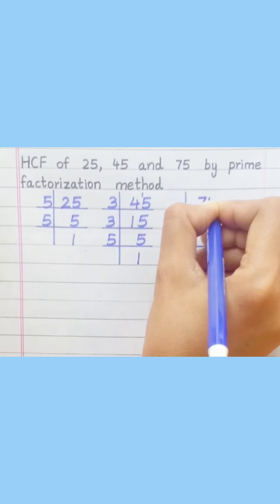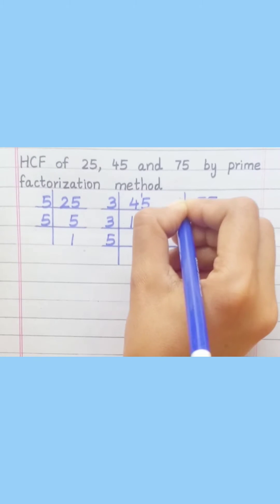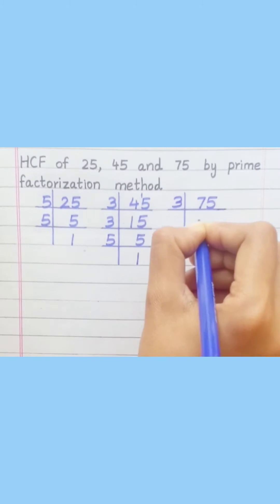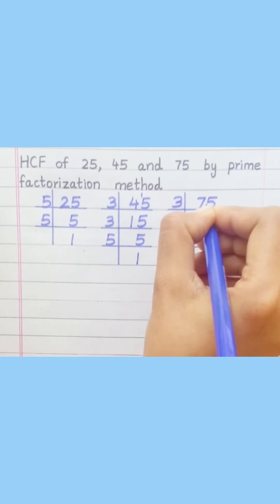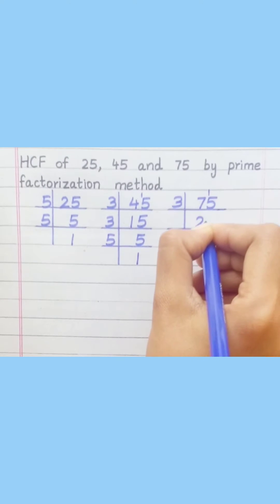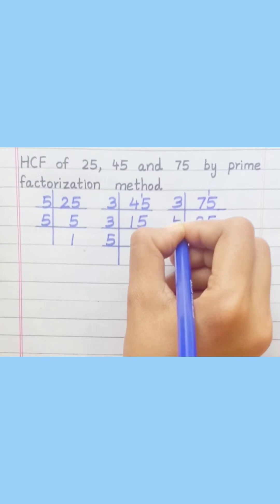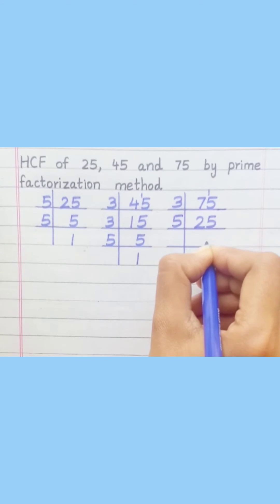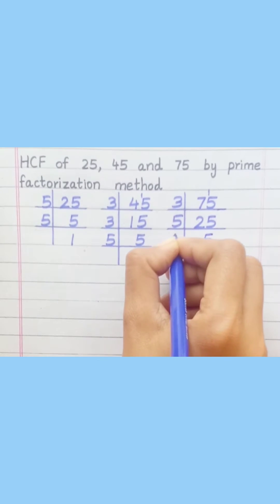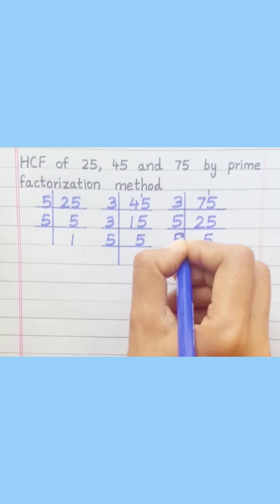75: 3 twos are 6, 3 fives are 15, 5 fives are 25, 5 ones are 5.